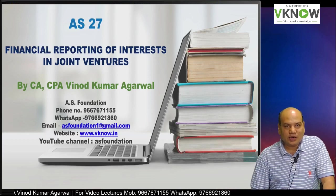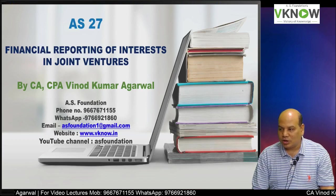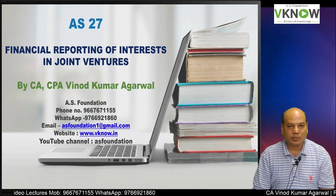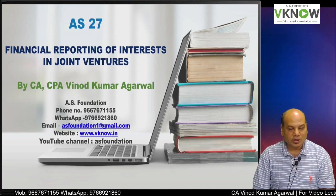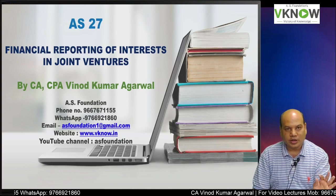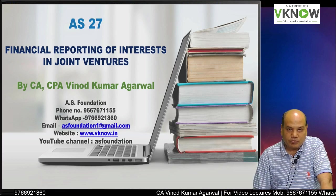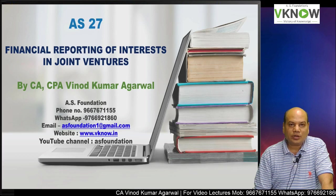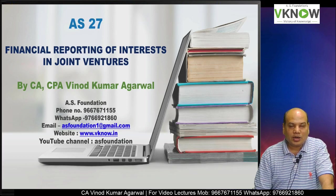Welcome to Accounting Standard 27, called Financial Reporting of Interest in Joint Venture. You have probably studied the joint venture topic in 12th standard, foundation course, or other accounting courses. Some portions of this standard are similar to what you studied before, but there are lot of differences because this standard will also require consolidation. We have already studied AS 21 and AS 23, which required consolidation, and this standard also requires consolidation.